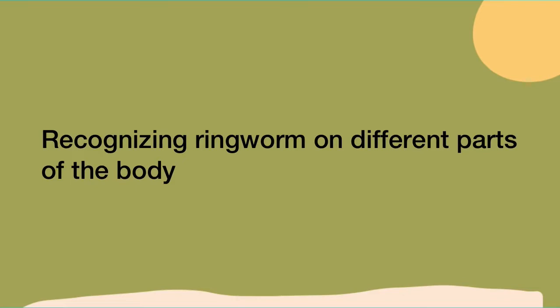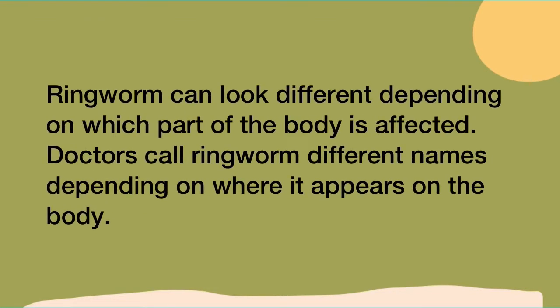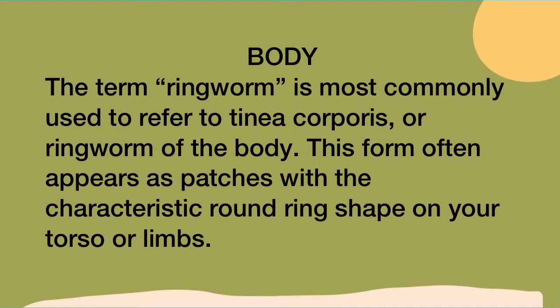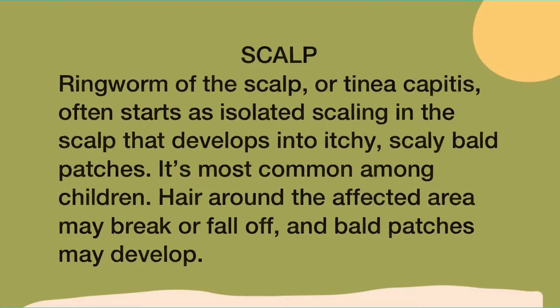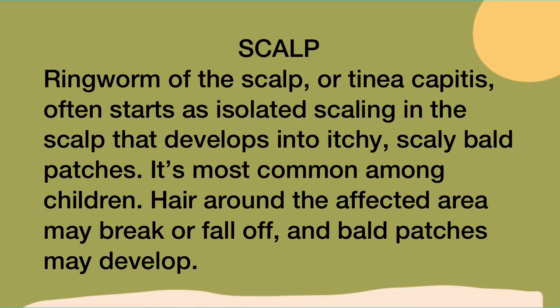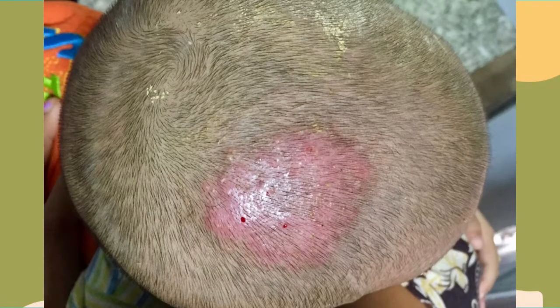Another symptom is hair loss. Ringworm can look different depending on which part of the body is affected, and doctors call it different names depending on where it appears. The term ringworm most commonly refers to tinea corporis, or ringworm of the body, which often appears as patches with a characteristic round ring shape on your torso or limbs. On the scalp, tinea capitis often starts as isolated scaling that develops into itchy, scaly, bald patches, and is most common among children.